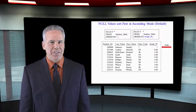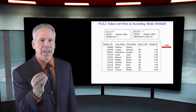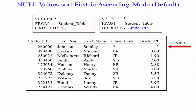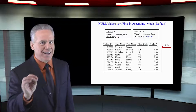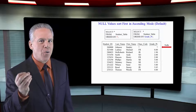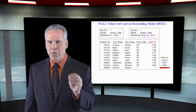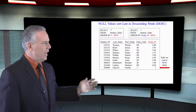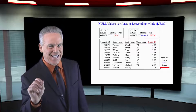A null value means no data is really there — there's nothing there — and it's usually represented with a question mark in your query tool. As you can see from our query, we're selecting from the student table, ORDER BY 5 or ORDER BY grade point. Here's what I want you to notice: the nulls come back first in ascending order — they always sort first. In descending order, the null values always sort last. We're sorting by grade point descending, so take a look at the last row — null values will always sort last in descending order.